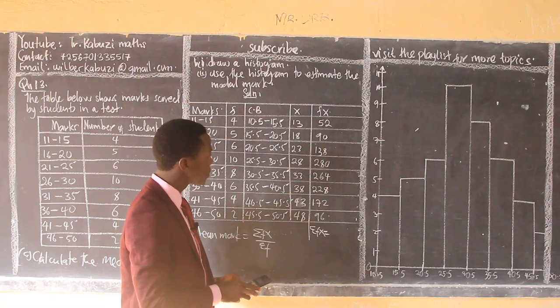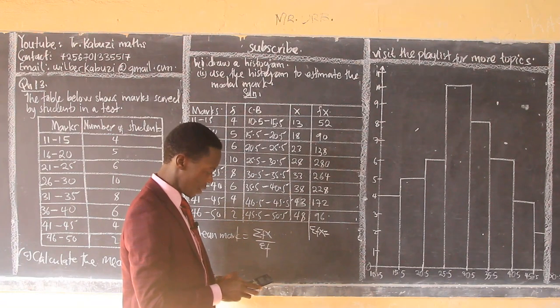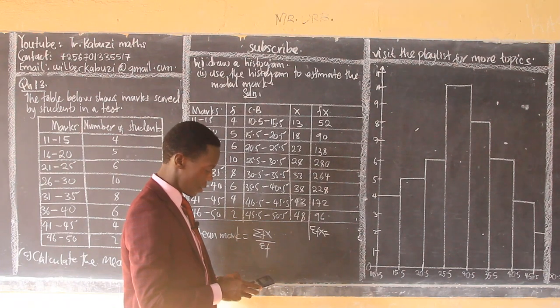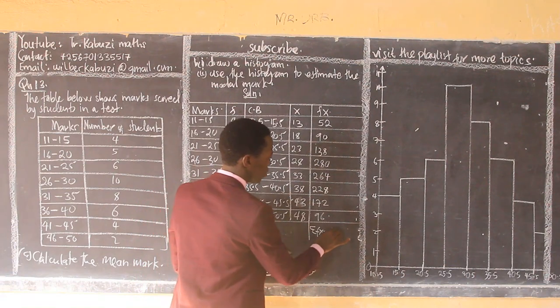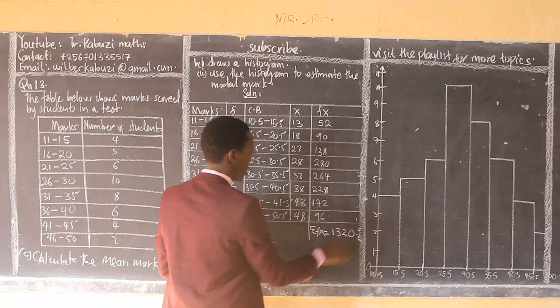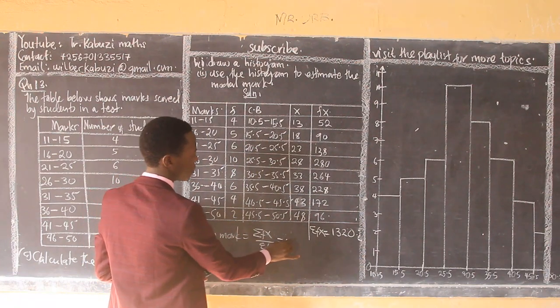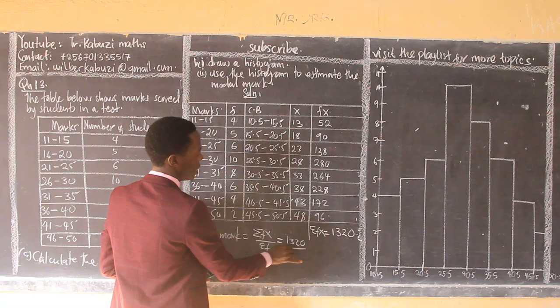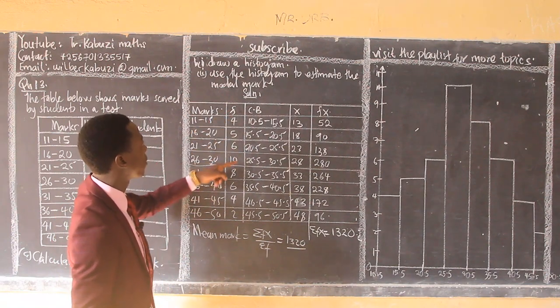So let me sum them quickly. When I sum them, I get 1,320. So now if I substitute in there, I have now 1,320 divided by the sum of frequency.